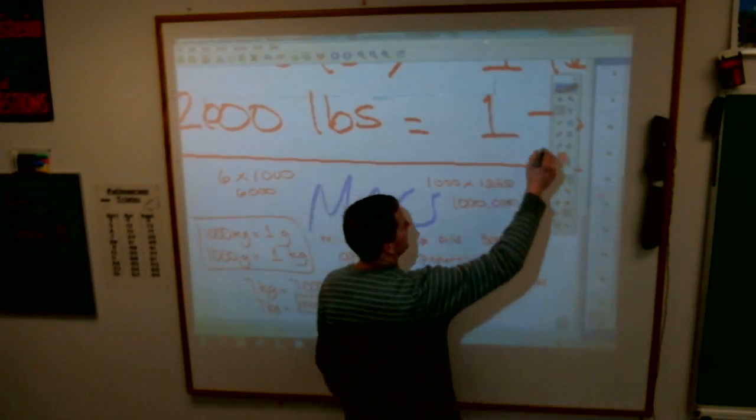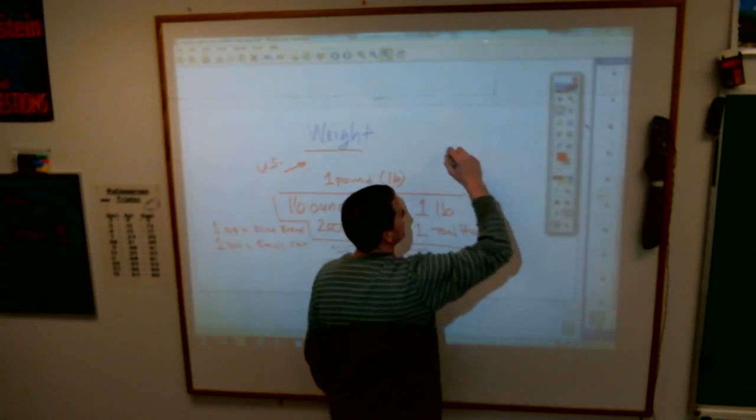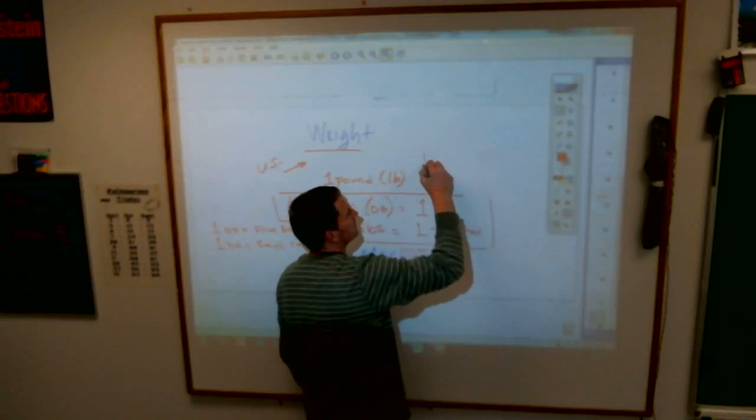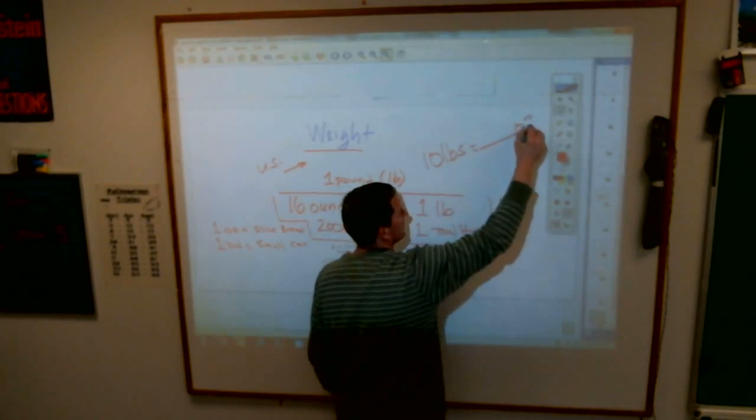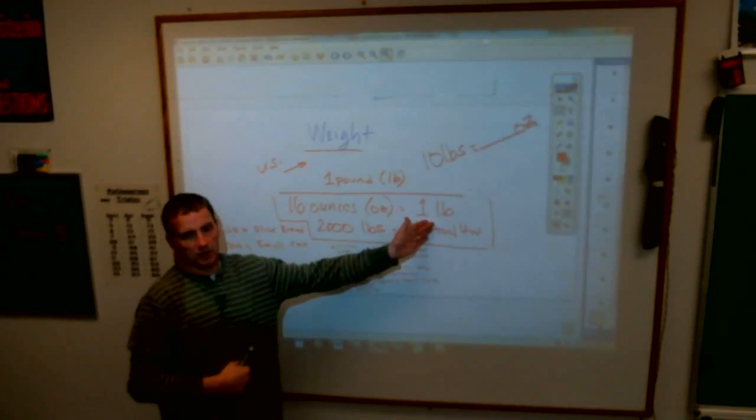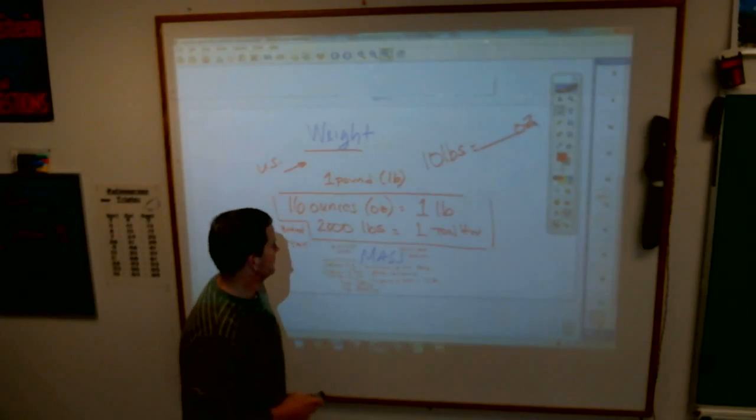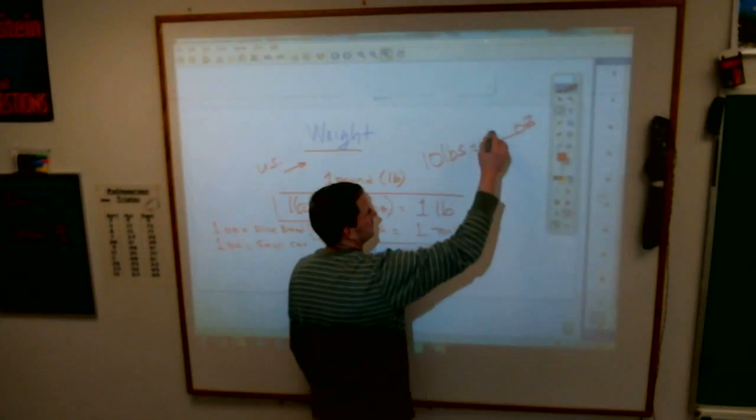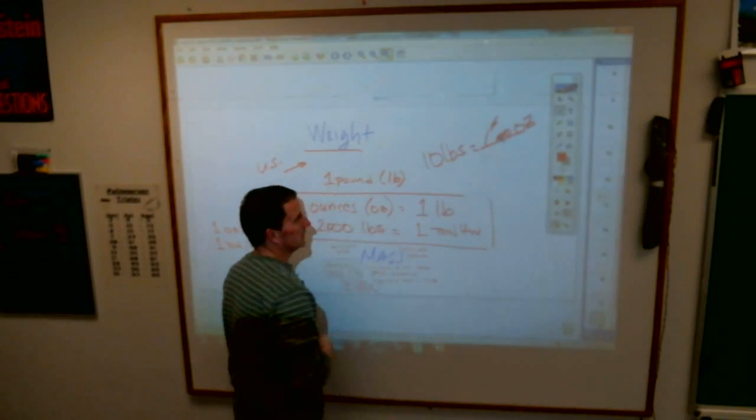How about 10 pounds equals how many ounces? Anybody? 10 LBs equals how many OZs? If there's 16 ounces in one pound, 10 pounds is going to be what, Chase? 160 ounces. 160 ounces. Multiply by 16.